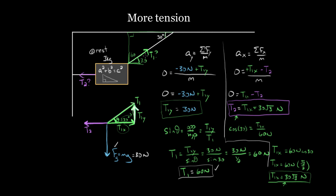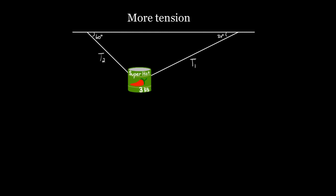We figured out T1: 60 Newtons. We figured out T2: 30√3 Newtons. Now we're ready — now we can figure out the super hot jalapeño problem. We'll do that in the next video.